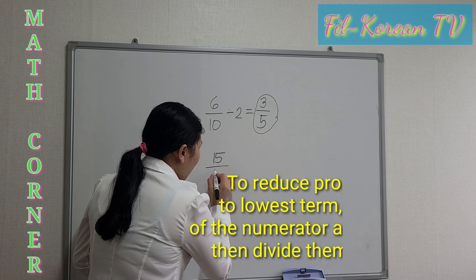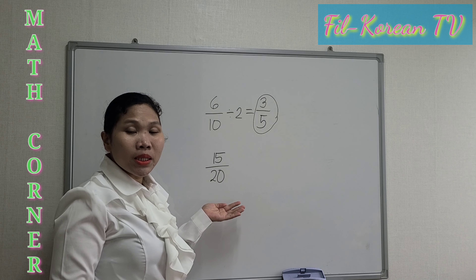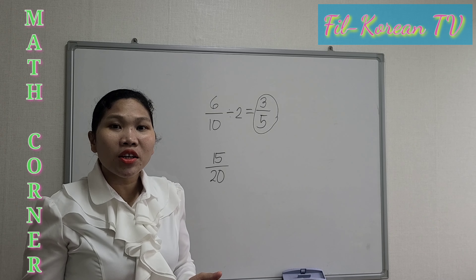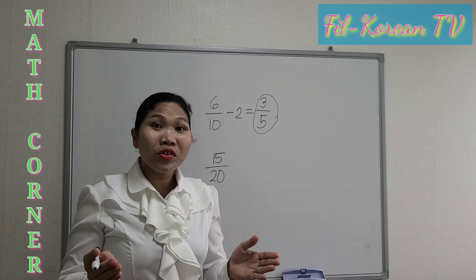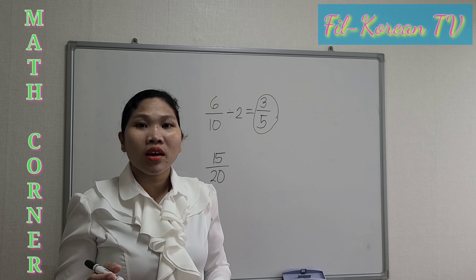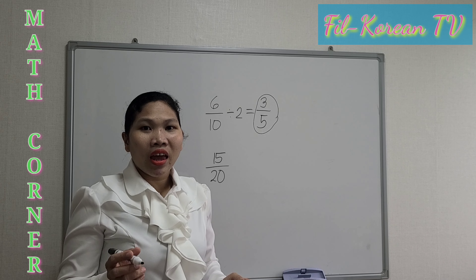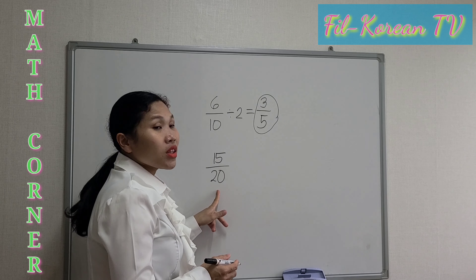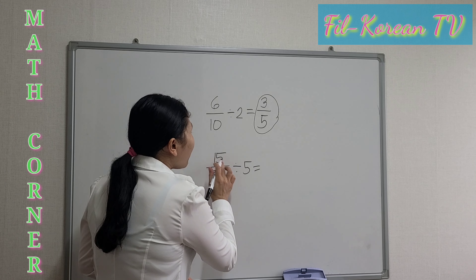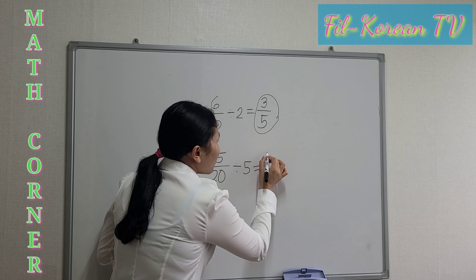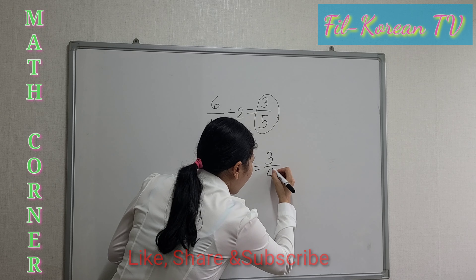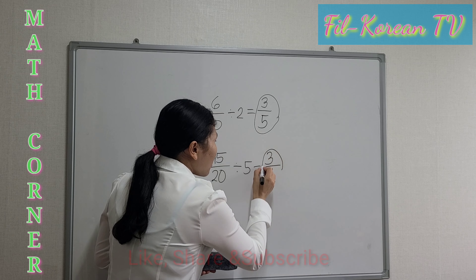Another example: 15 over 20. This is another proper fraction — the numerator is less than the denominator. We will just get the GCF of 15 and 20. If you do not know how to get the GCF, please watch my other video about finding the GCF. You can find the link in the description box below. The GCF of 15 and 20 is 5. We will divide by 5: 15 divided by 5 equals 3, and 20 divided by 5 equals 4. So the answer is 3 fourths.